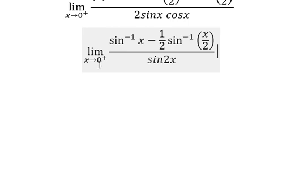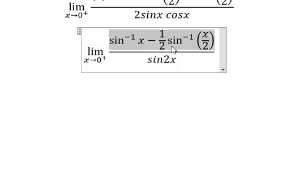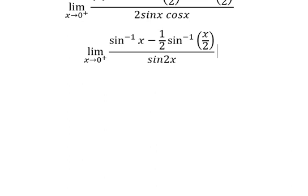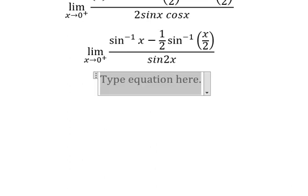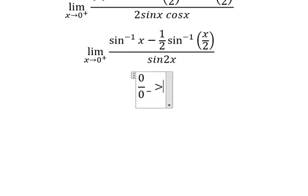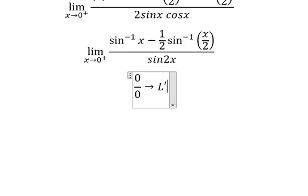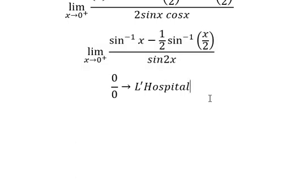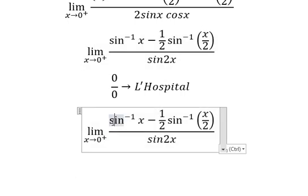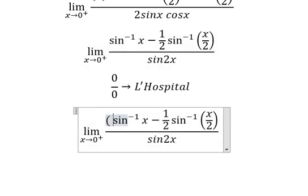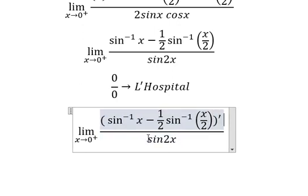Next, when x approaches zero and we substitute here, this one gives zero and this one gives zero. That means we have zero over zero again, so we need to use L'Hôpital's rule again. That means we need to take the derivative of the numerator and denominator once more.